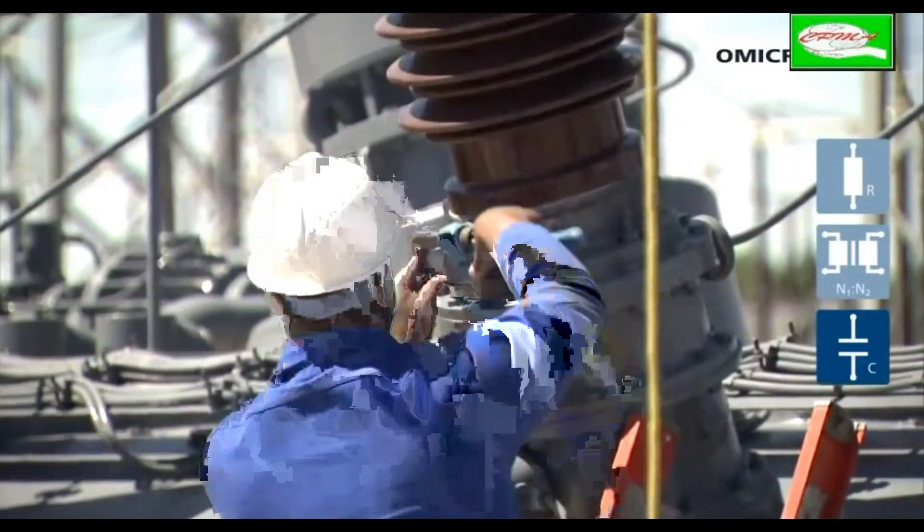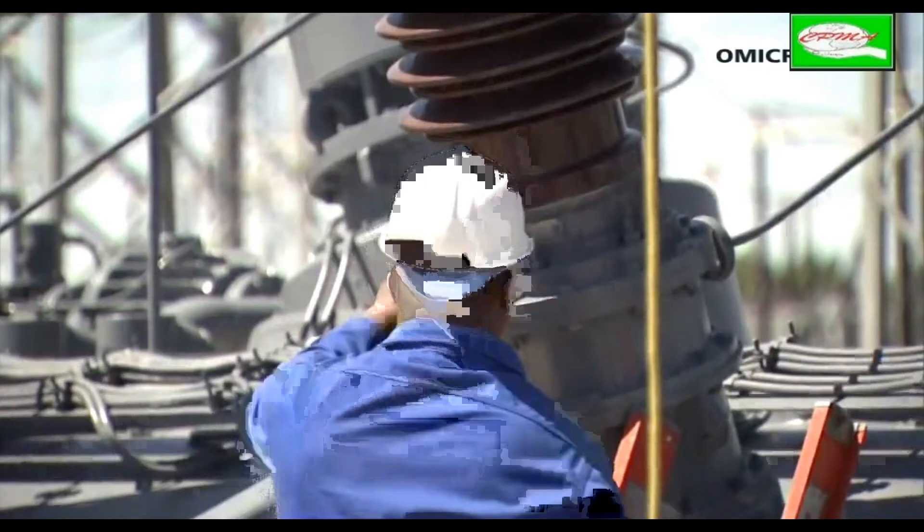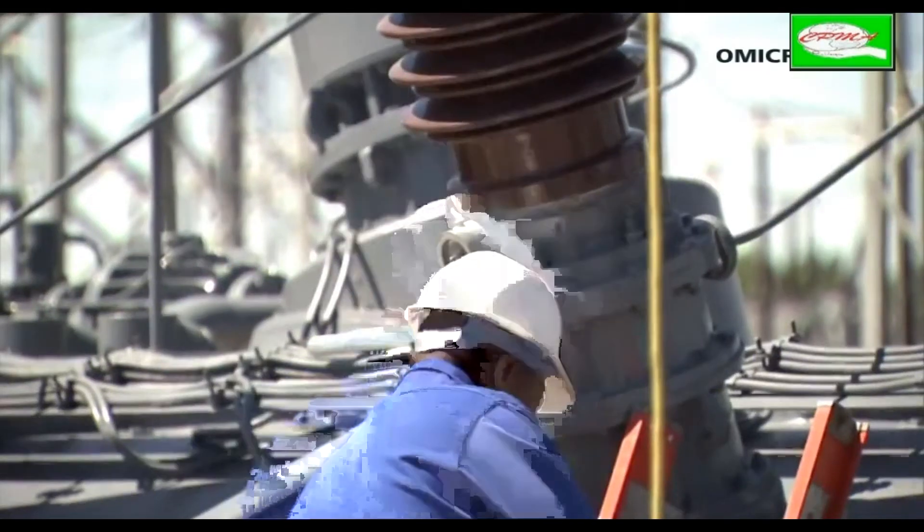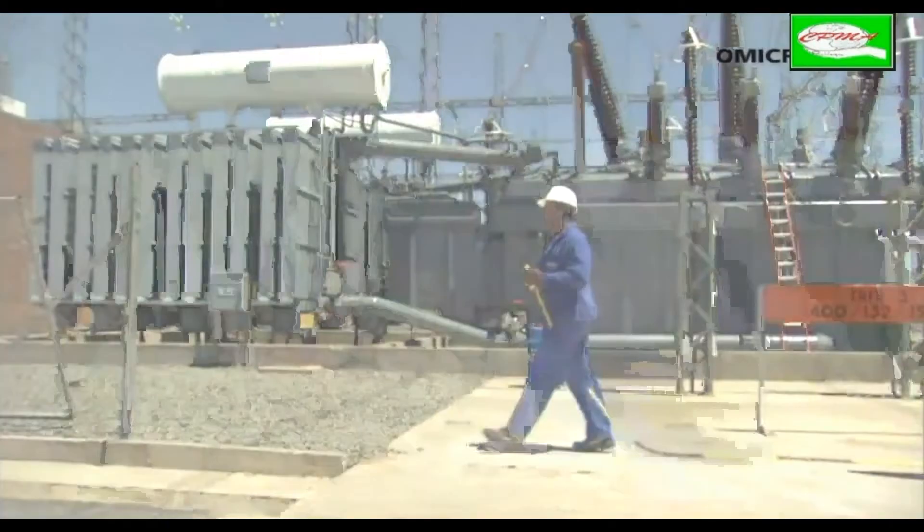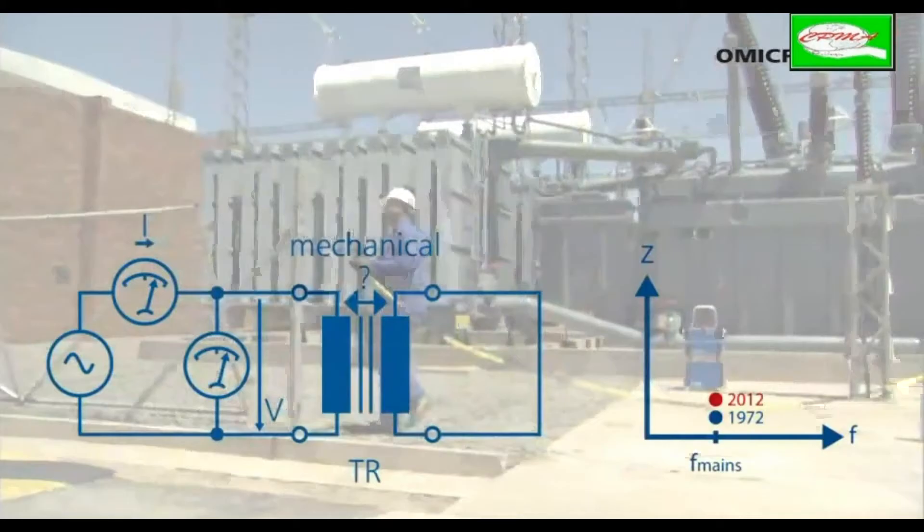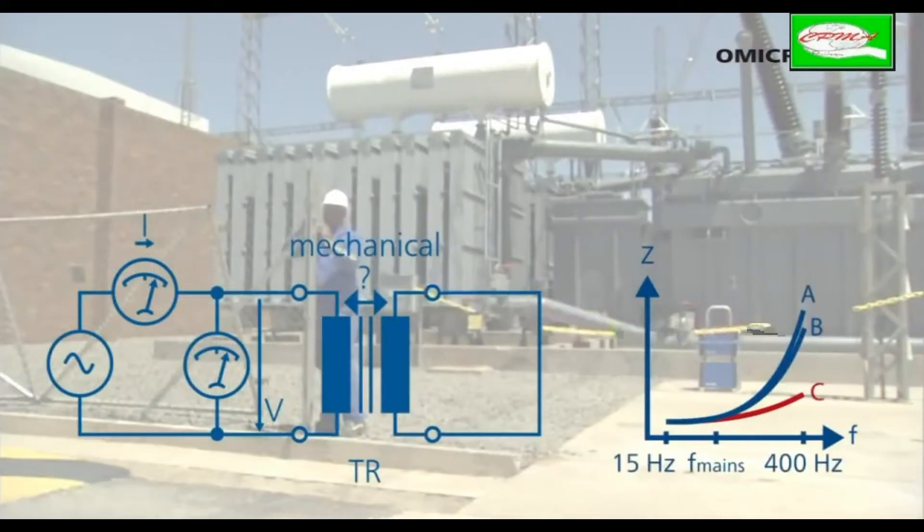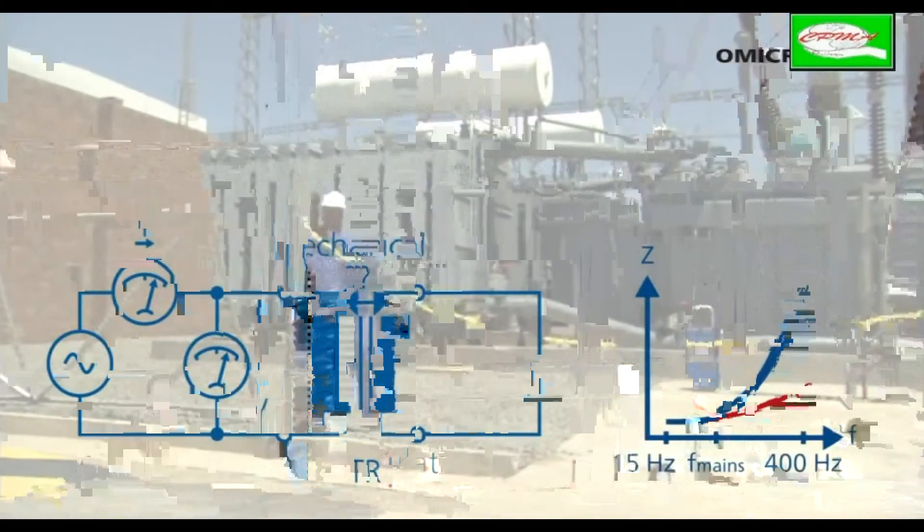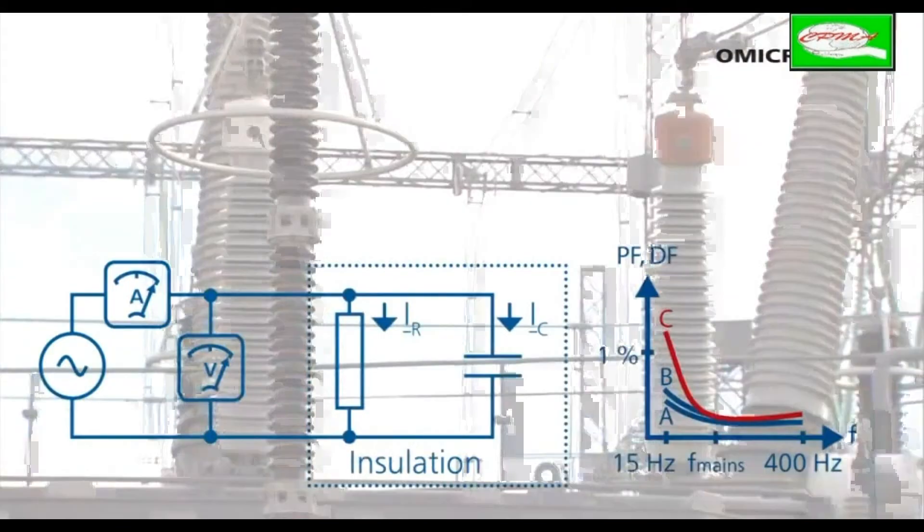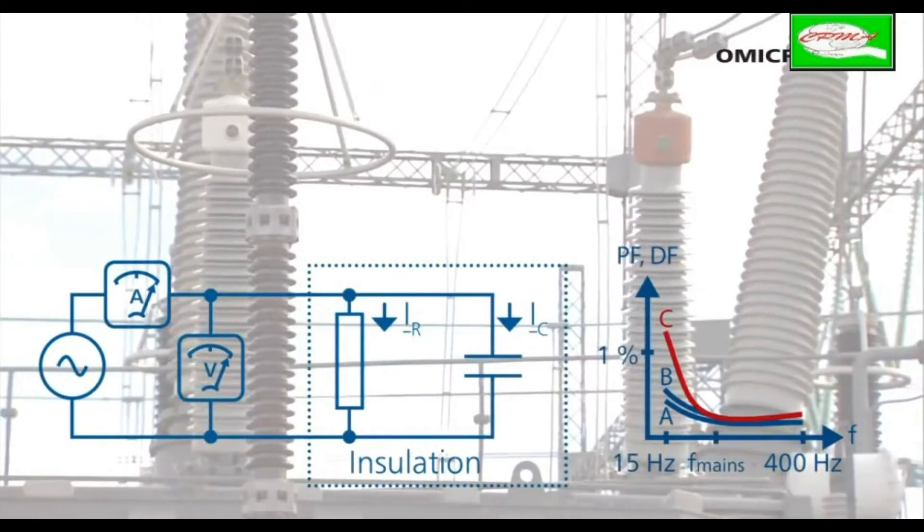Após uma falha elétrica, a geometria do enrolamento e a integridade do isolamento podem ser verificados usando medições de diagnóstico avançado, tais como impedância de curto-circuito ou reatância de dispersão e resposta de frequência das perdas de fuga, ou medição de fator de potência ou fator de dissipação sobre uma série de frequências.